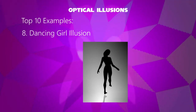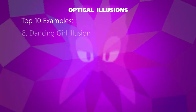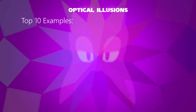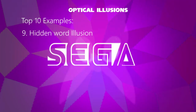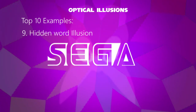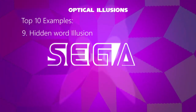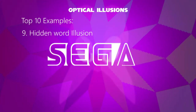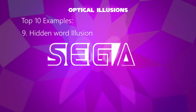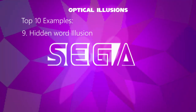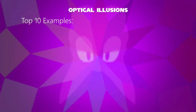Actually, the dancing girl is swiveling. Ninth example: the hidden word illusion. Like the word 'Sega,' it seems partially hidden, but anyone can read it easily — or find it difficult to read.